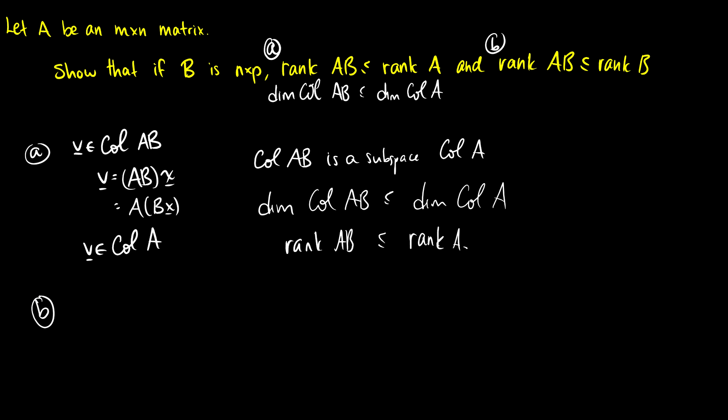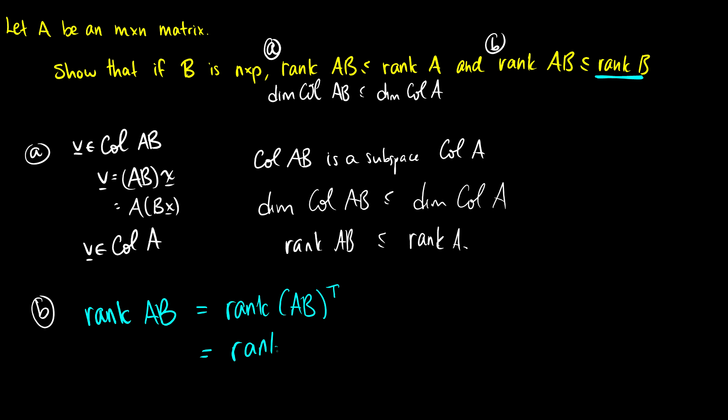For part B, we need to show that rank(AB) is less than or equal to rank(B). We'll use the rank theorem and what we proved in part A. By the rank theorem, rank(AB) equals rank of AB transpose. We use transposes here because we need to relate to the row vectors of B. Rank of AB transpose equals rank of B transpose times A transpose, by distributing the transpose.